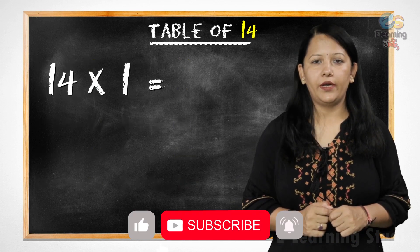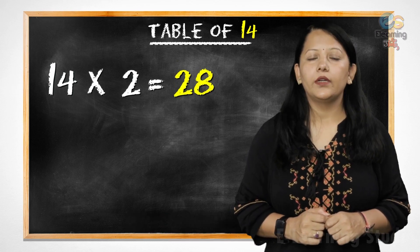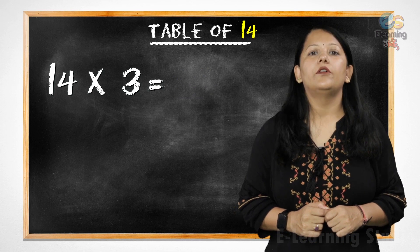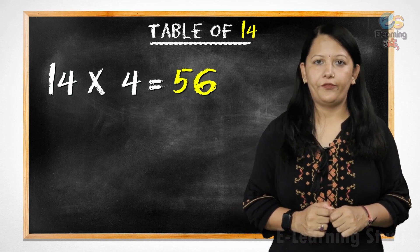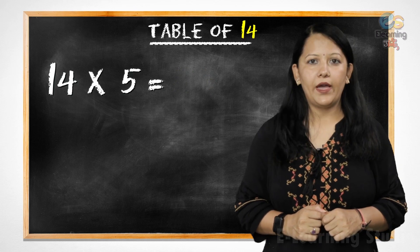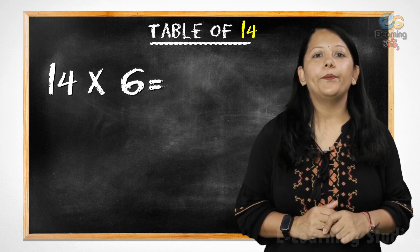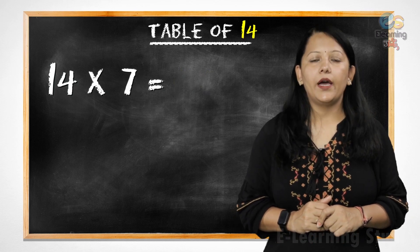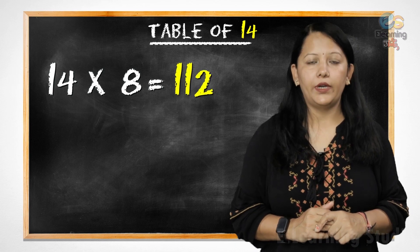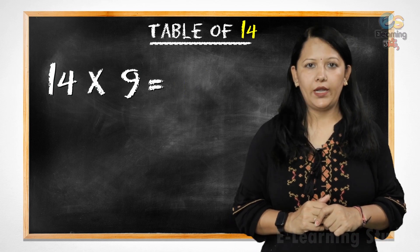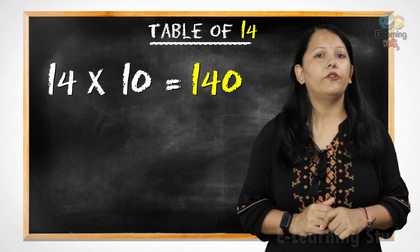14 ones are 14. 14 twos are 28. 14 threes are 42. 14 fours are 56. 14 fives are 70. 14 sixes are 84. 14 sevens are 98. 14 eights are 112. 14 nines are 126. 14 tens are 140.